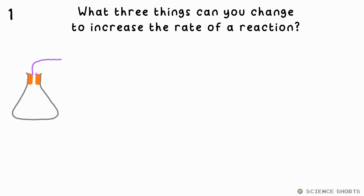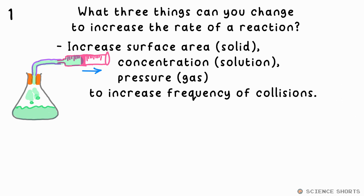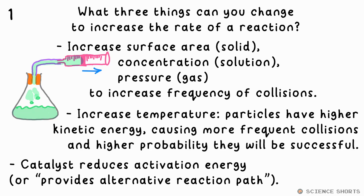What three things can you change to increase the rate of a reaction? You can increase the surface area for solids, concentration for solutions, or pressure for gases — this causes particles to collide more frequently. You can also increase the temperature; the particles have more kinetic energy and so not only collide more frequently, but are also more likely to collide successfully and react. You can also use a catalyst, a substance that isn't used up in a reaction, but it reduces the activation energy required for particles to react, which means they're more likely to react when they collide, increasing the rate of reaction.